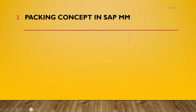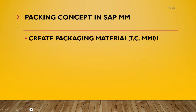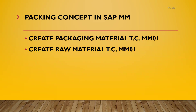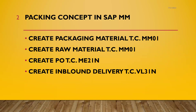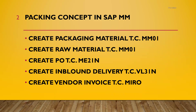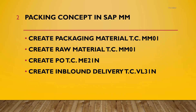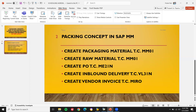I am going to create a packaging material in MM01. I am going to create a raw material in MM01, then I am going to do a purchase order, inbound delivery, and in the inbound delivery I am going to pack the material. Material packaging will be done in the inbound delivery. Finally, I am going to do vendor invoice verification. In the inbound delivery itself, I am going to do goods receipt and check the inventory in MMBE. We are going to do it in the live system.